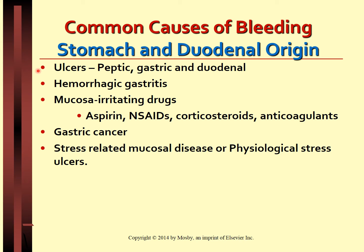Bleeding from stomach and duodenal origin: bleeding peptic ulcers account for 40 percent of cases of upper GI bleed. Hemorrhage is caused by bleeding from granulation tissue or erosion of an ulcer into an artery or vein. Gastritis can cause acute inflammation and destroy the mucosal lining, exposing blood vessels. H. pylori is a major cause of chronic gastric ulcer and bleeding. Drugs including NSAIDs like ibuprofen, corticosteroids, and anticoagulants like aspirin, Coumadin, enoxaparin, and heparin are also major causes.